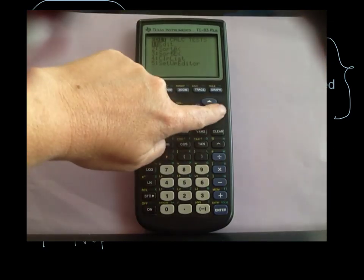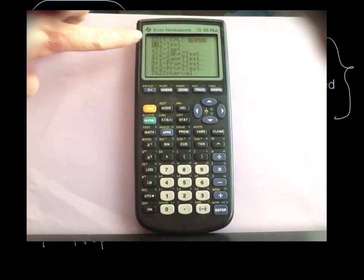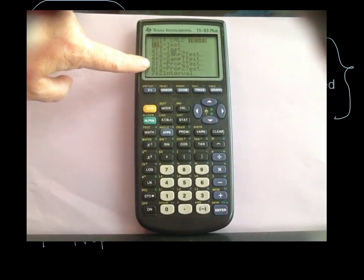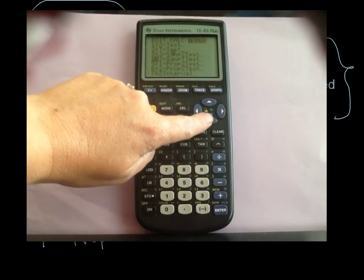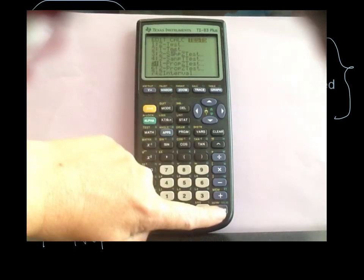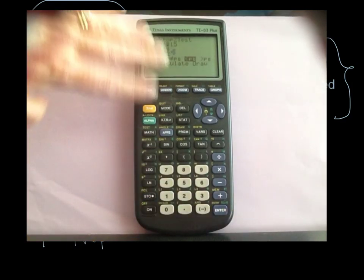Okay, hit your STAT key to pull up your tests. Go over to tests. Remember that this is a proportion, so we're going to go all the way down to 1-prop, prop is proportion, 1-prop z-test, and hit enter. Notice that the entries are very different than z-test or t-test.